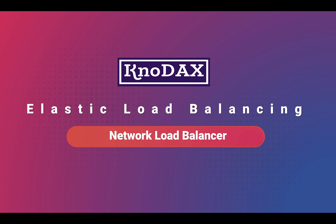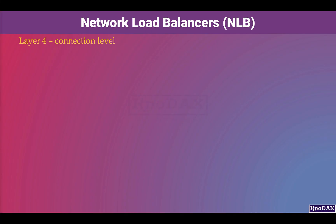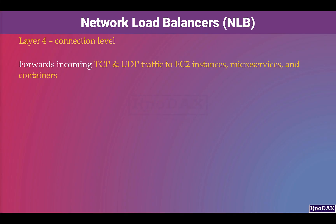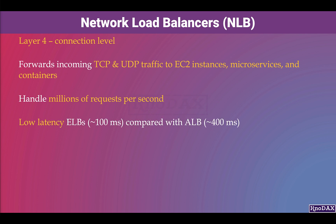The Network Load Balancer works at Layer 4. It forwards incoming TCP and UDP traffic to EC2 instances, microservices, and containers. Network Load Balancers can handle millions of requests per second and are low-latency ELBs, with a latency of around 100 milliseconds, compared to Application Load Balancers that have a latency of around 400 milliseconds.